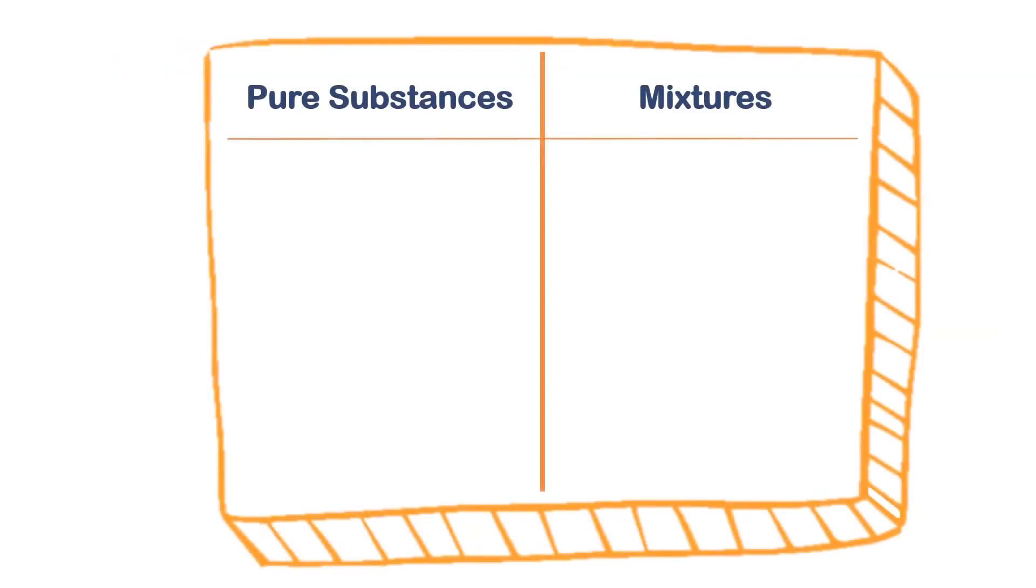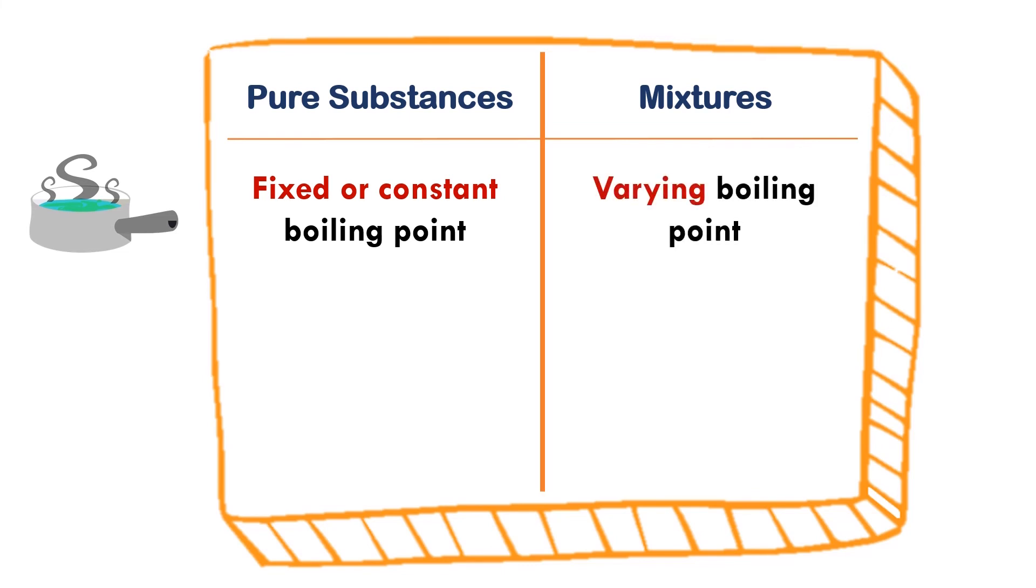Because during boiling, pure substances have fixed or constant boiling point, which is 100 degrees Celsius, while mixtures have different or varying temperature at different times.